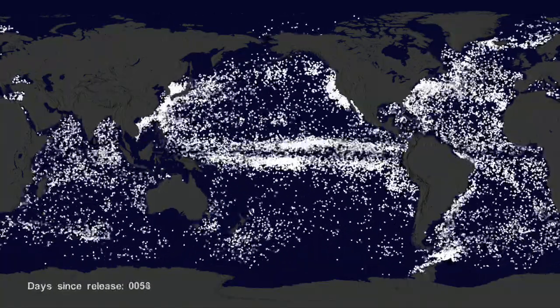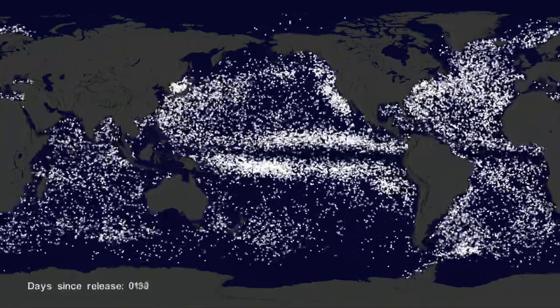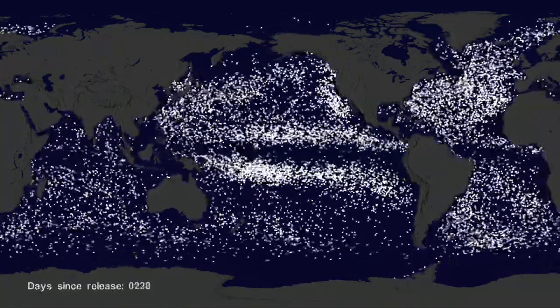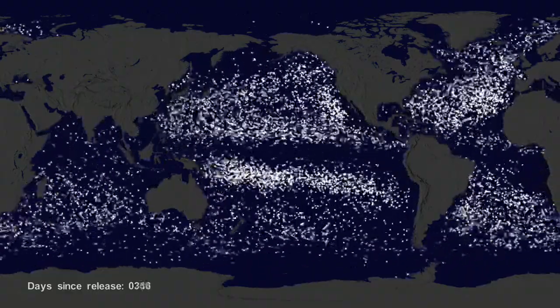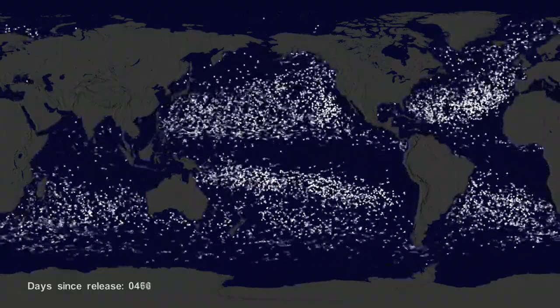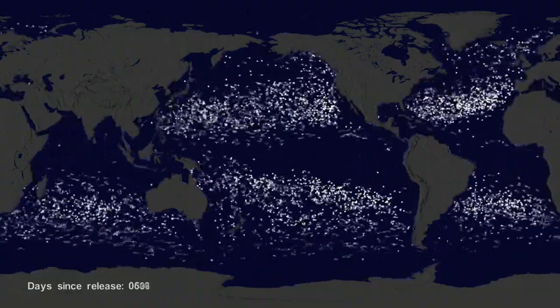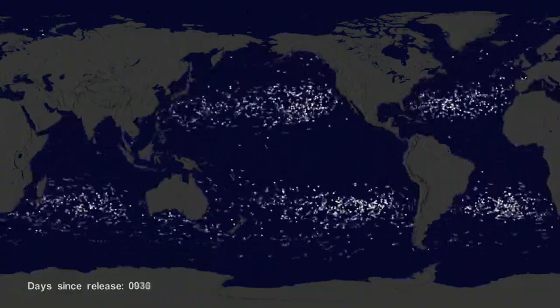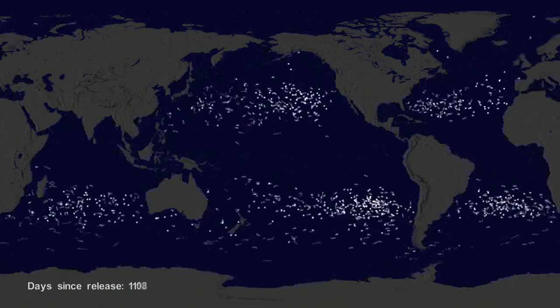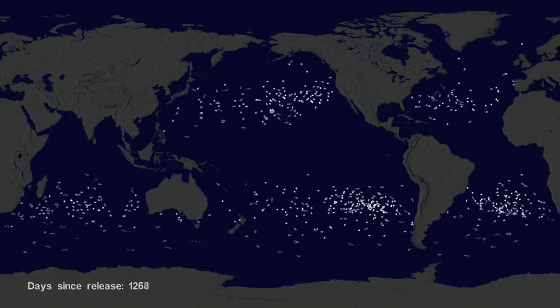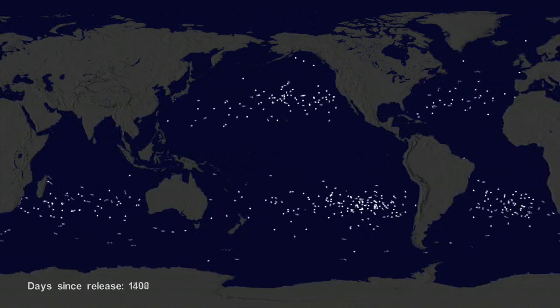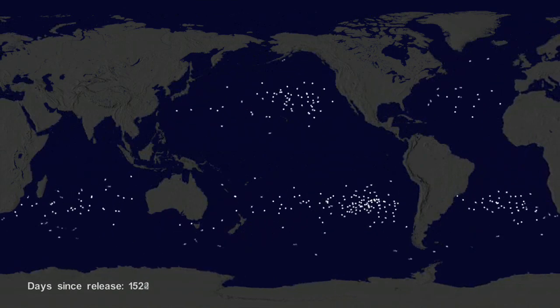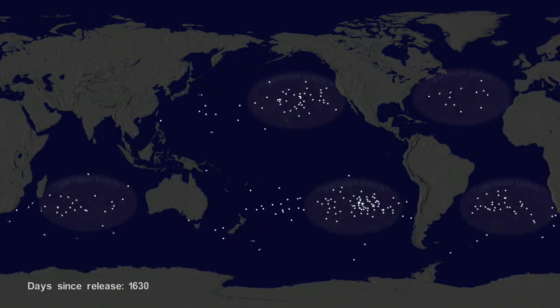If we let all the buoys go at the same time, we can observe buoy migration patterns. The number of buoys decreases because some buoys don't last as long as others. The buoys migrate to five known gyres, also called ocean garbage patches.